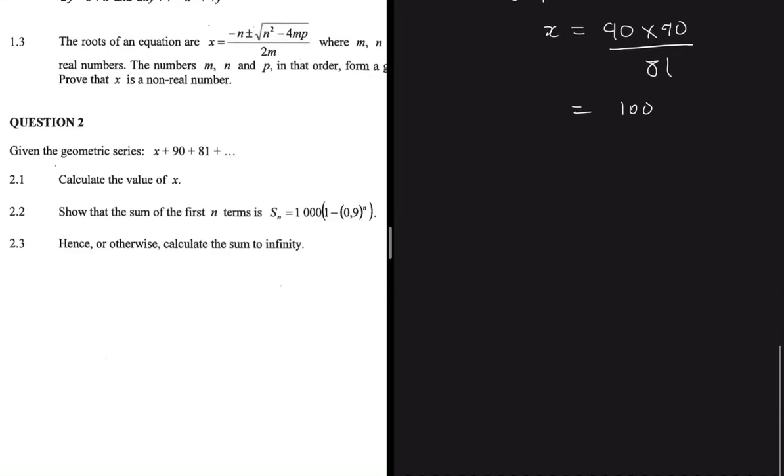And then let's move ahead. 2.2 says show that the sum of the first N terms in the sequence is S_n equals 1000 multiplied by 1 minus 0.9 to the power N.